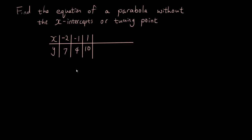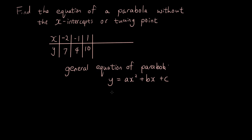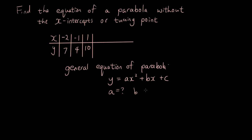We know that the general equation of a parabola is y equals ax squared plus bx plus c. All you have to do is find out what a, b, and c are and you have your equation of the parabola. For example, it could be y equals 4x squared plus 3x plus 2 — but I just made that up. What we're looking for is what a, b, and c are.